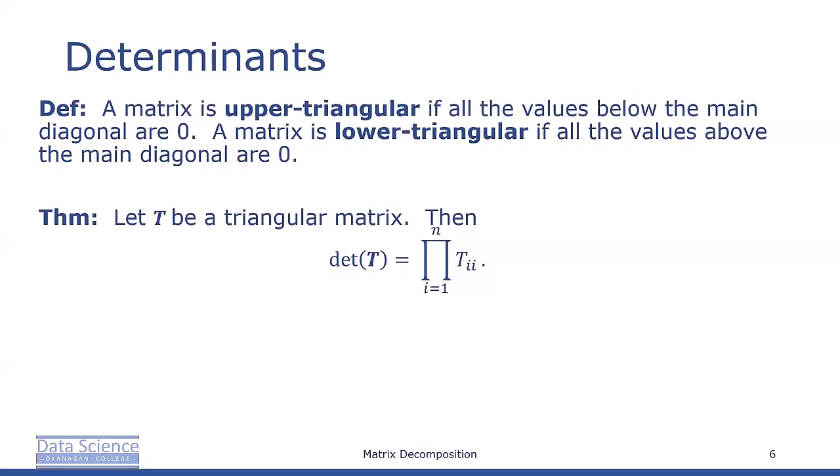We call a square matrix T an upper triangular matrix if T_{ij} = 0 for every i > j. That is, the matrix is zero below the main diagonal. Analogously, we define a lower triangular matrix as a matrix with zeros above the main diagonal. For any triangular matrix, the determinant is simply the product of all the diagonal elements.